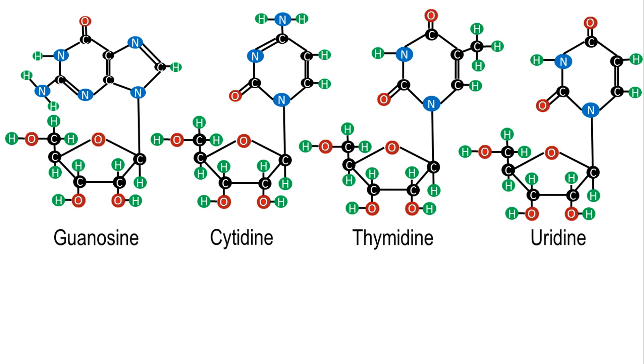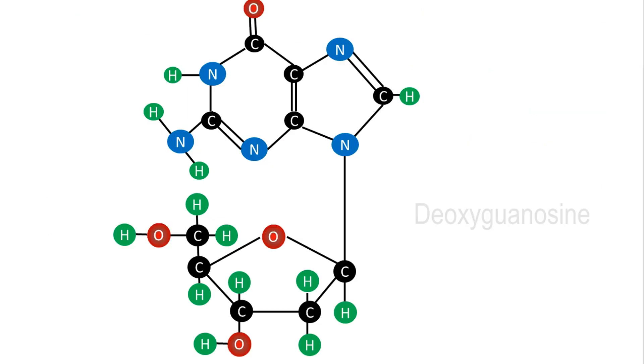Deoxyribonucleosides are named by adding the prefix deoxy to their ribonucleoside counterpart. For instance, a guanine deoxyribonucleoside is called deoxyguanosine.